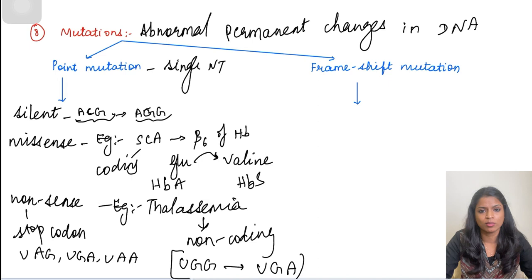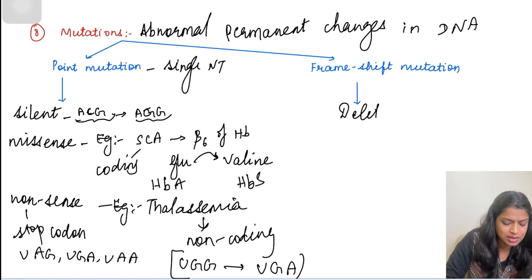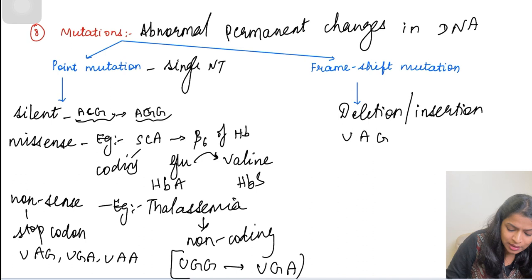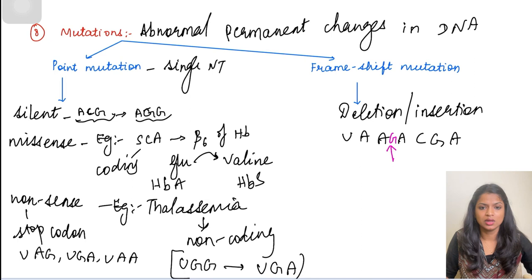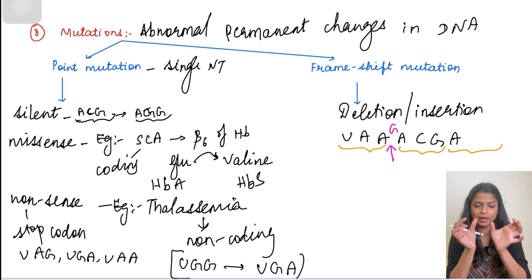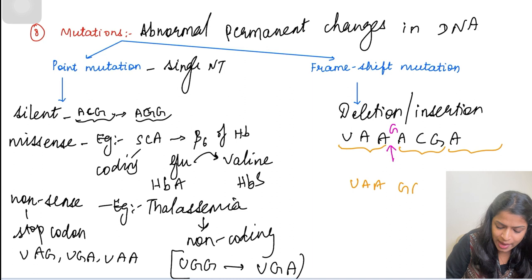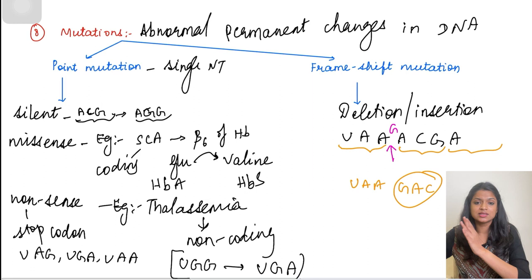A frameshift mutation occurs when there is deletion or insertion of a nucleotide, altering the entire DNA reading sequence. For example, if I add a G nucleotide into a sequence, the reading frame shifts: what was read as UAA, UACG, etc. now becomes UAA, GAC, GA, and so on. The entire reading frame of the amino acid sequence is altered, resulting in a frameshift mutation.